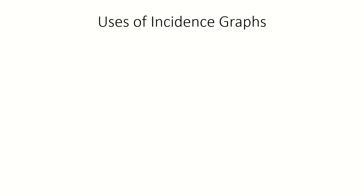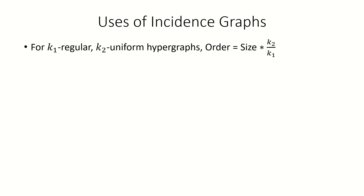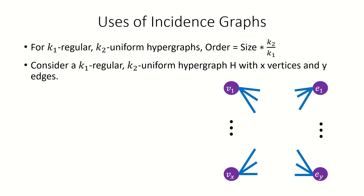Moving on, using incidence graphs, we can show that for hypergraphs that are k sub 1 regular and k sub 2 uniform, the number of vertices in the hypergraph must equal k sub 2 over k sub 1 times the number of edges in the hypergraph. To see why, think about the incidence graph of a k sub 1 regular and k sub 2 uniform hypergraph h, with x vertices and y edges. The incidence graph is bipartite, with one part corresponding to the vertices of the hypergraph with all vertices of degree k sub 1, and another part corresponding to the edges of the hypergraph with all vertices of degree k sub 2.